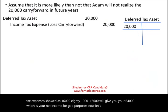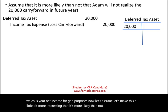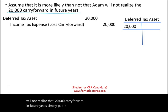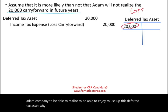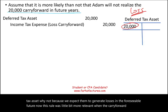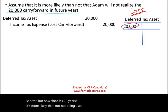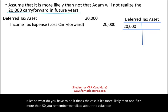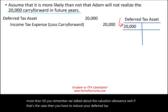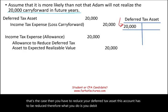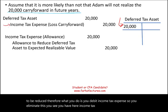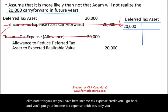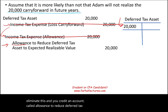Now let's make this more interesting. Assume it is more likely than not that Adam will not realize the $20,000 carry forward in future years. In simple English, we don't expect Adam Company to be able to enjoy or use up this deferred tax asset, because we expect them to generate losses in the foreseeable future. This rule applies when the probability is more than 50%. You remember we talked about the valuation allowance? If that's the case, then you have to reduce your deferred tax asset. Therefore, you debit income tax expense and credit an account called allowance to reduce deferred tax asset to expected realizable value.